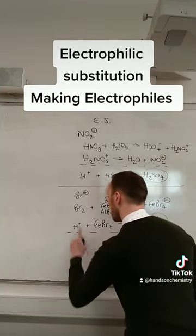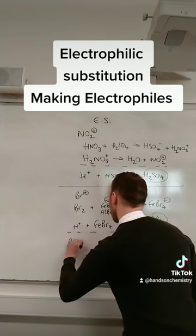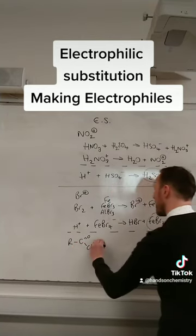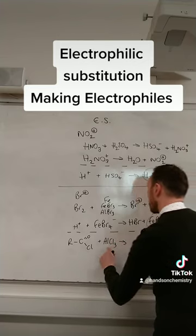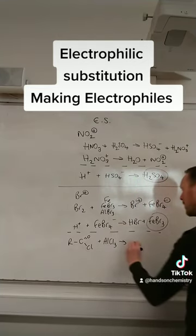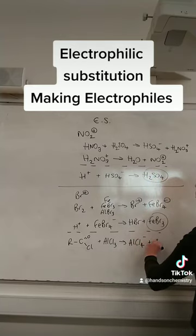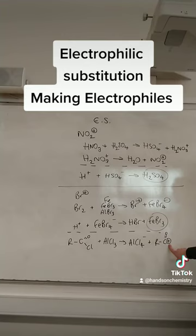The last one — I'll do the acylium ion. You're looking for an acyl chloride like RCOCl, and you're going to react it with AlCl₃ — that's called Friedel-Crafts acylation. What you get is AlCl₄⁻ and your RCO⁺ as your electrophile.